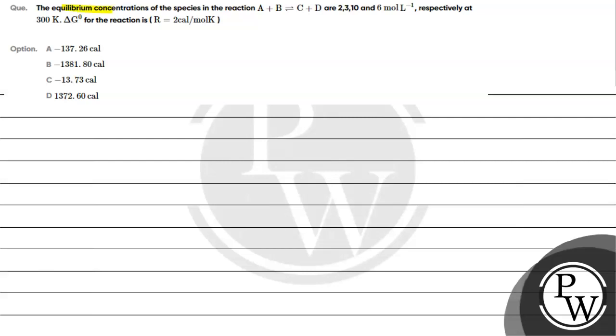Let's read this question. The question says equilibrium concentrations of the species are 2, 3, 10, and 6 mole per liter respectively at 300 kelvin. Find delta G.